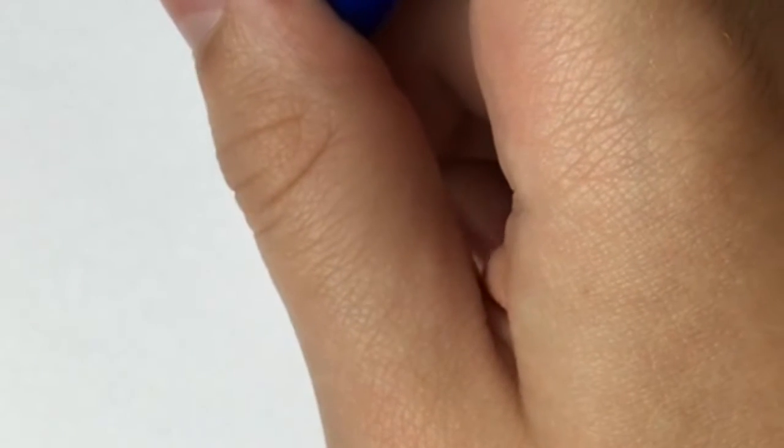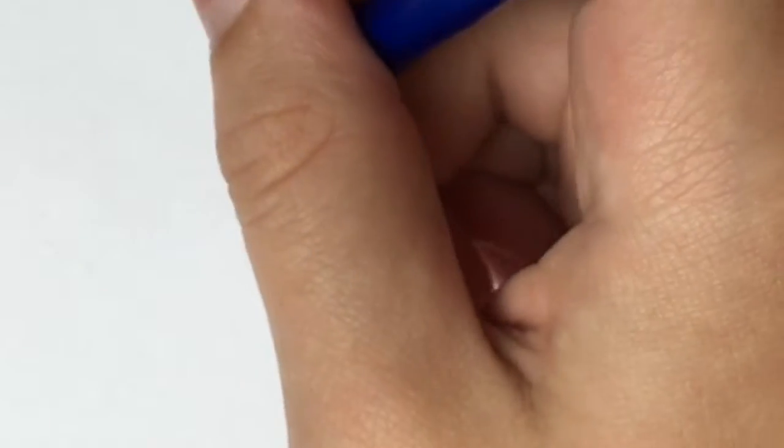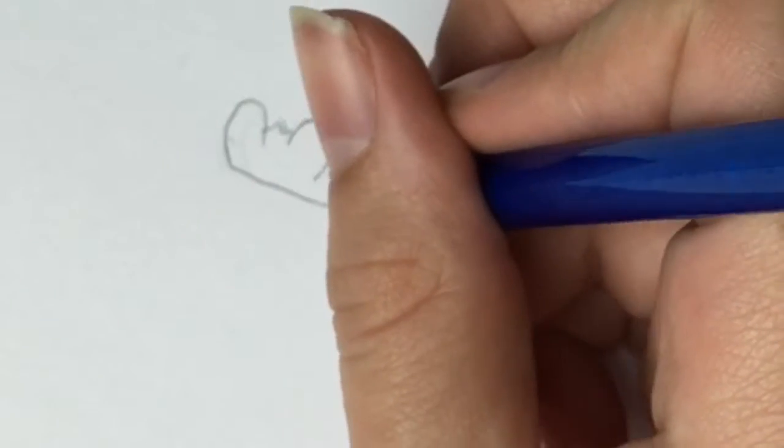Then add a jawline by making a straight line which curves up at the end toward a smile. Then add a little jagged line in between the two nostrils.